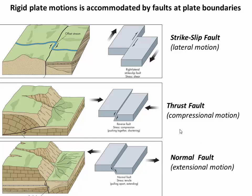The thrust fault accommodates compression, and the normal fault accommodates extension. Although I've talked about these in terms of plate boundaries, it's important to recognize these can also happen within plates as well, and they commonly do. But in any event, it's these faults that allow plates to move past each other or allow plates to break.